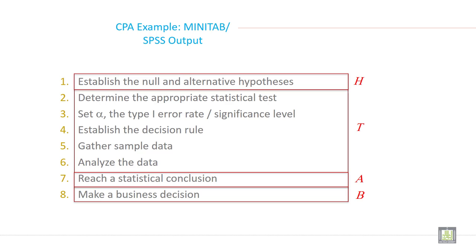Establish the decision rule. Gather sample data. Analyze the data. Reach a statistical conclusion and then make an implication. Write the implication or you can say decision, whatever you understand.